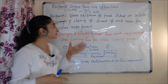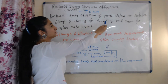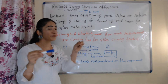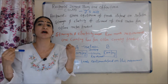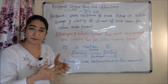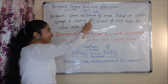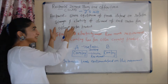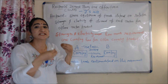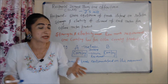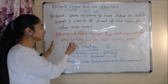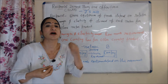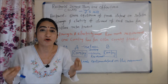Reciprocal Demand states that equilibrium of trade depends on the relative strength and elasticity of demand of each nation for the other nation's product. Strength and elasticity means how much requirement one nation has for the other nation's product.